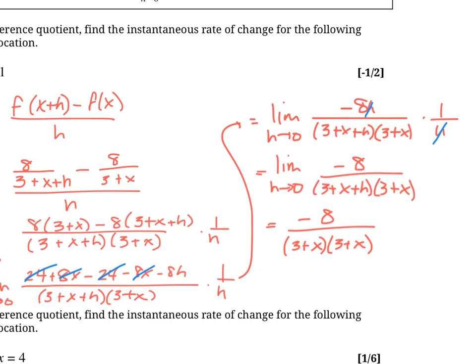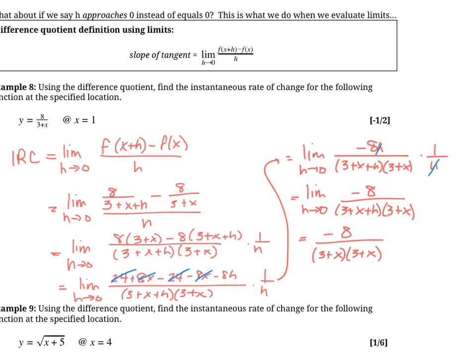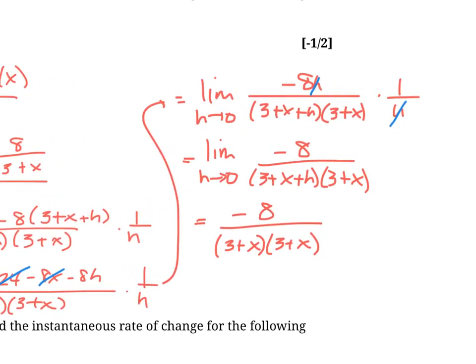And lastly, we are asked to plug in at x equals 1, right? So at x equals 1, what does this thing going to come out to? So now we can plug in our x, so that's basically going to be negative 8 over 4 times 4, so 16, which simplifies to negative 1 half. There we go. It agrees with our answer up there.